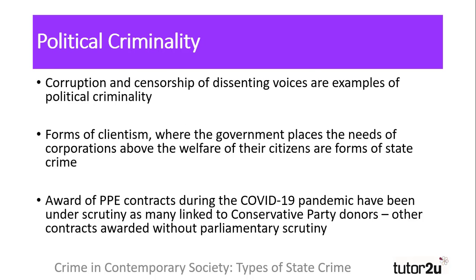Looking at political criminality in more detail: this includes the censorship of dissenting voices, usually through the control of the media or through the disappearance of critics of a regime, as has been the case in many authoritarian regimes. A second form of political criminality is clientism, where the government places the needs of its donors and corporations above the needs of the people they are elected to serve. This can include granting access to environmentally harmful practices such as fracking, which has been linked to several earth tremors and environmental damage.